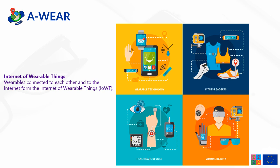Wearables also include fitness gadgets, for instance smart shoes and smart socks, and also healthcare devices — for instance, somebody might have a health monitoring device attached to the body — and also virtual reality equipment, for instance Google Glass or virtual reality glasses and so on. So all of these things basically fall under wearables and connectivity of all such devices forms the internet of wearable things.